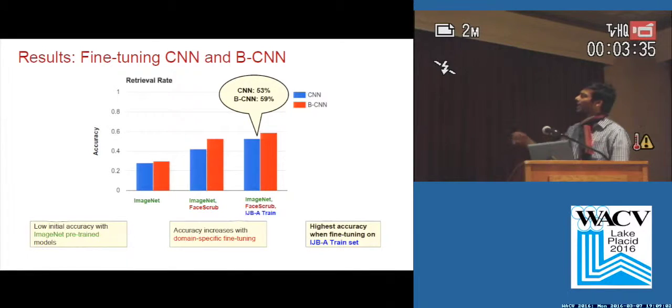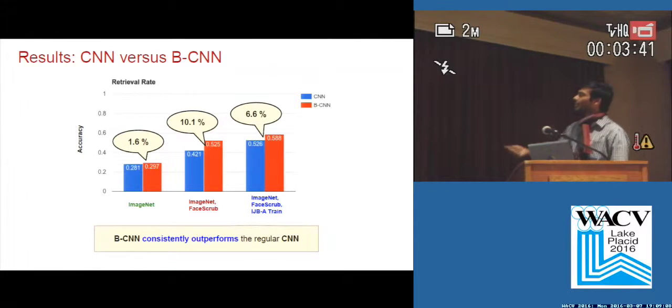When we move over to IJBA train, which is very close to the test distribution, we see pretty good improvements. The bilinear CNN consistently outperforms the regular CNN on all settings.